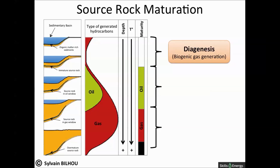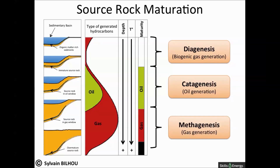With the increase of pressure and temperature associated with the burial of the sediments, the kerogen is altered. The increase of temperature provides energy to break the bonds between carbon atoms. This step is called thermal cracking. As burial increases, oil and then gas are generated. The maturation has been defined in two steps: catagenesis, when oil is generated at the beginning of this phase and then both oil and gas are generated; and metagenesis, when dry gas is generated.